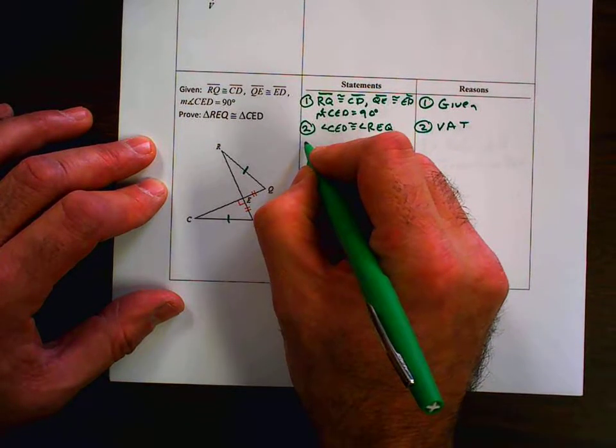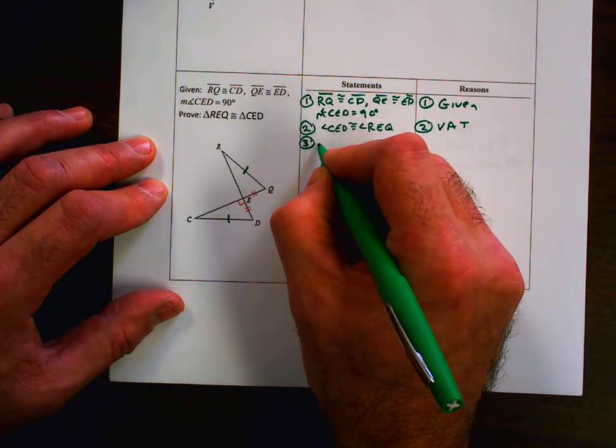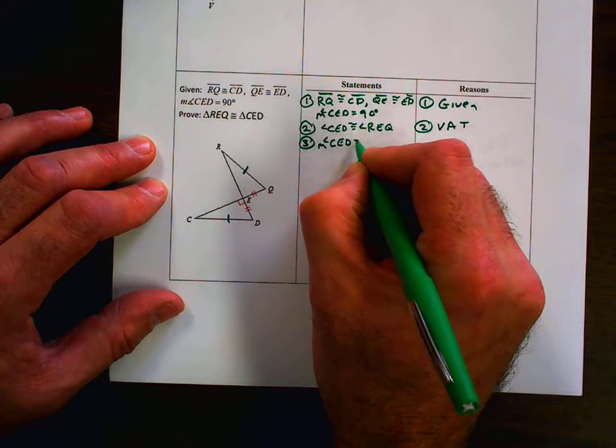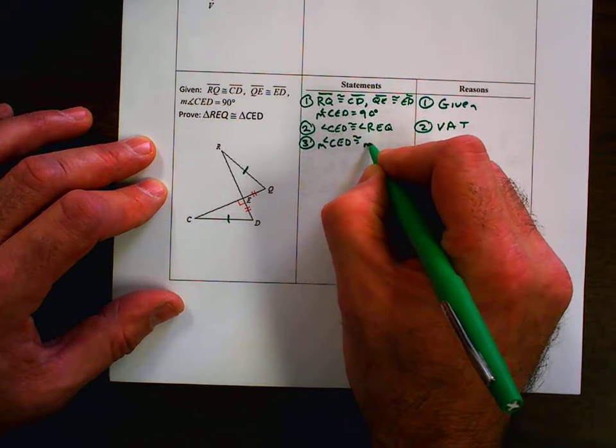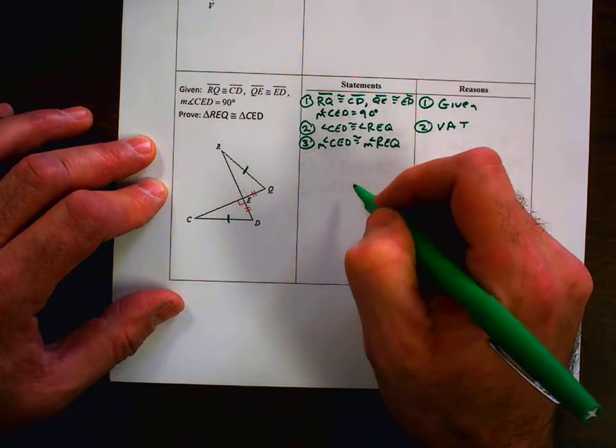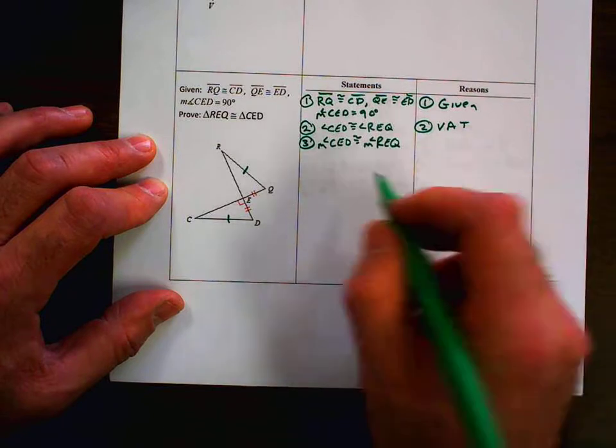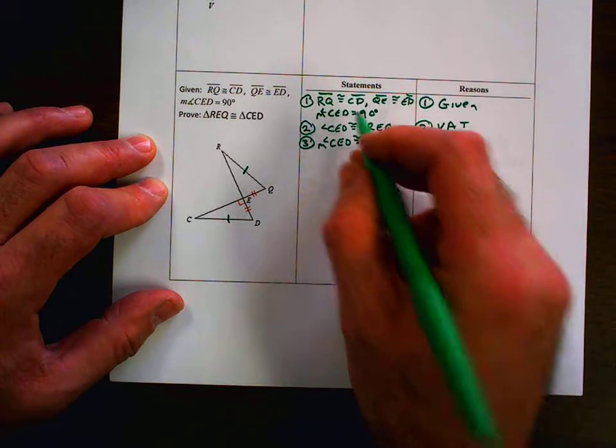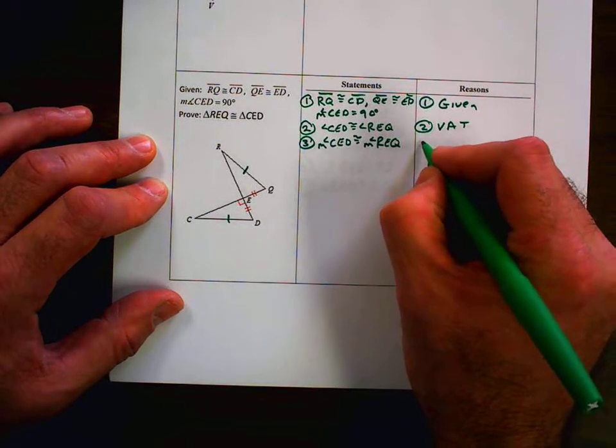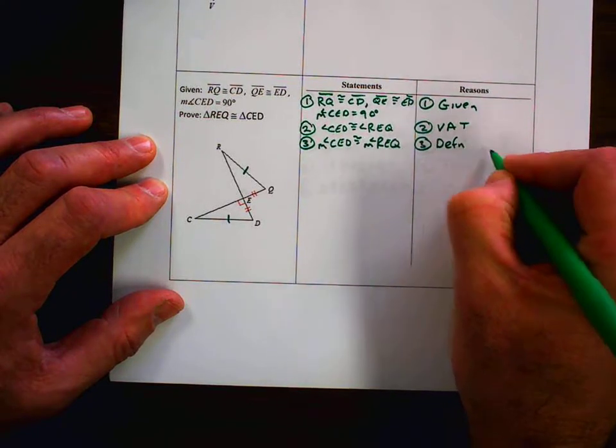Now that vertical angle theorem, by definition of congruence, we could say that measures are going to be equal. And the reason why I do that is that allows me then to go ahead and use transitive property to state that REQ is going to have the same measure. So there I have the definition of congruence.